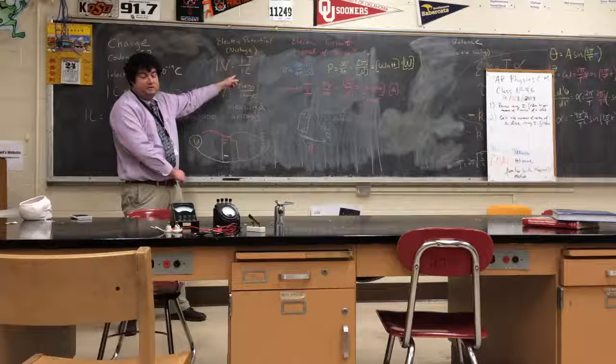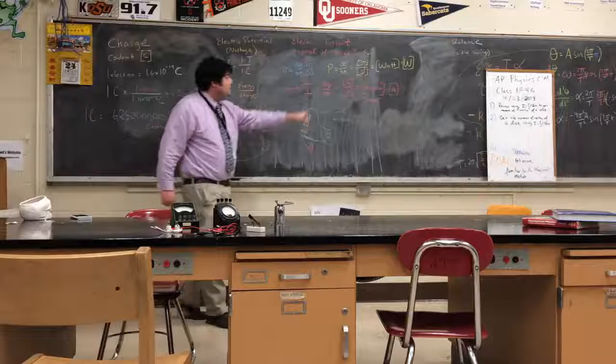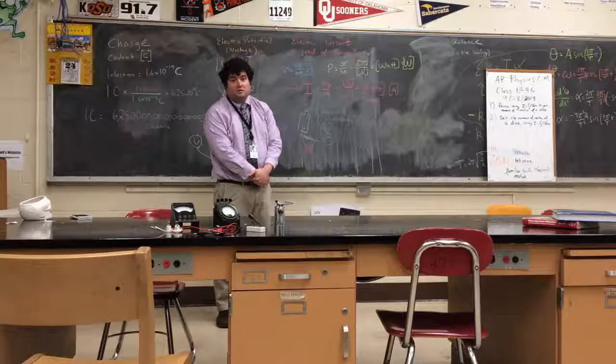Voltage or electric potential, which is the energy each coulomb of charge going through has. And electric current, which is the speed of charges as they go through a circuit.